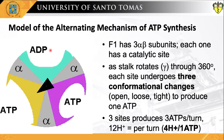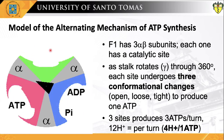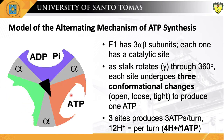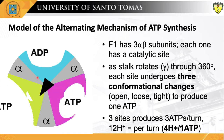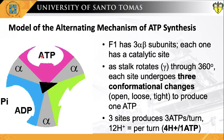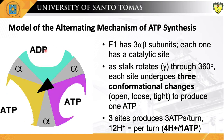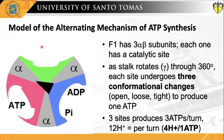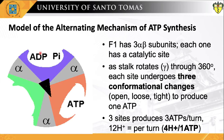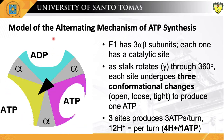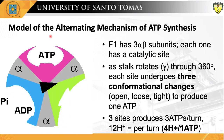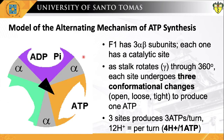Here's another view of the binding change mechanism. The active site of a beta subunit cycles between three states. In the loose state, ADP and phosphate enter the active site. The enzyme then undergoes a change in shape, forcing these molecules together, with the active site in the resulting tight state binding the newly produced ATP with very high affinity. Finally, the active site cycles back to the open state, releasing ATP and binding more ADP and phosphate, ready for the next cycle of ATP production.